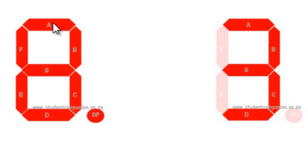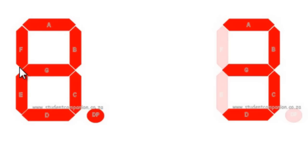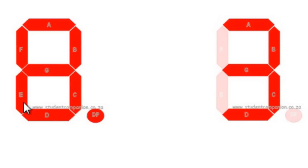This figure shows the different segments that form a 7-segment display. We have segment A on top, then B, C, D, E, F, G, and the decimal point. If I want to display the digit 1, I need to switch on segment B and segment C only and leave the rest off.